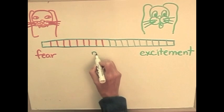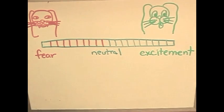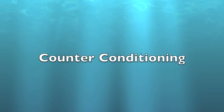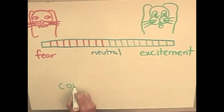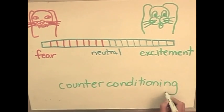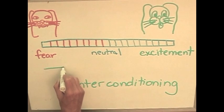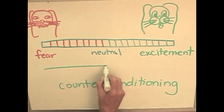During counter-conditioning, a dog passes through a neutral point. When counter-conditioning is done, the dog changes her emotions about a trigger from a negative one like fear to a positive one like excitement.